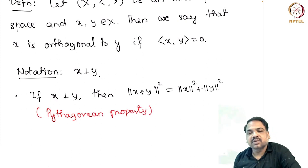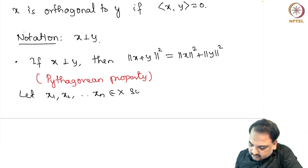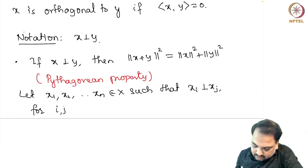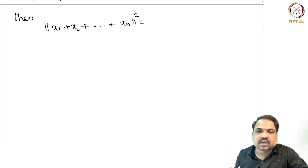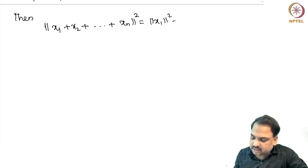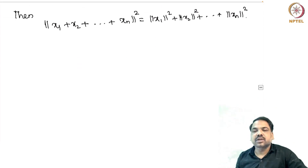Since this Pythagorean property is valid for two vectors, we can say that it is also valid for finitely many vectors. So let us take x1, x2, …, xn in X such that xi is orthogonal to xj for i ≠ j, with i, j in {1, 2, …, n}. Then we can say that ‖x1 + x2 + … + xn‖² equals ‖x1‖² + ‖x2‖² + … + ‖xn‖². This is the Pythagorean property for n mutually orthogonal vectors.